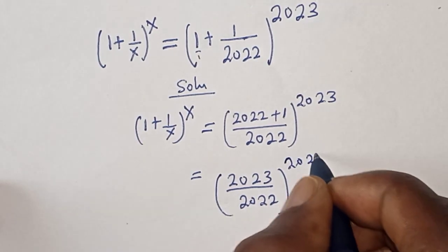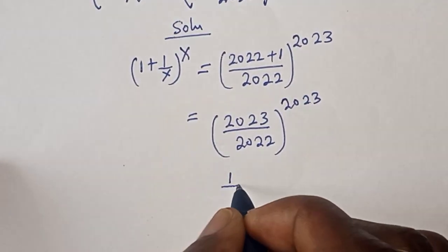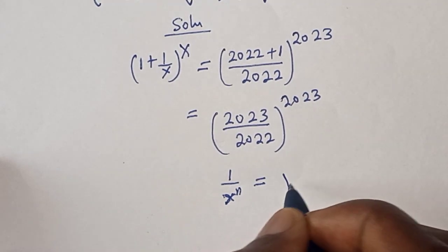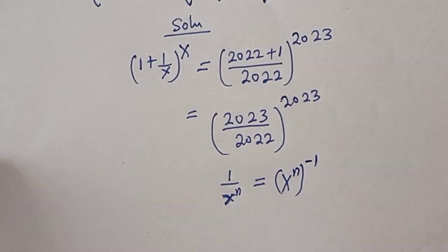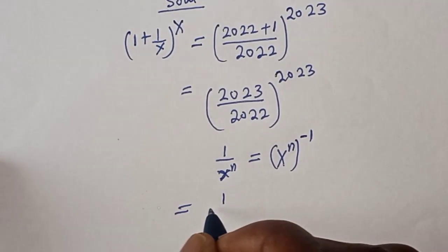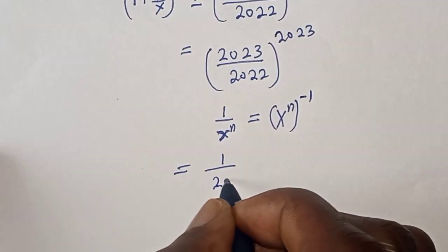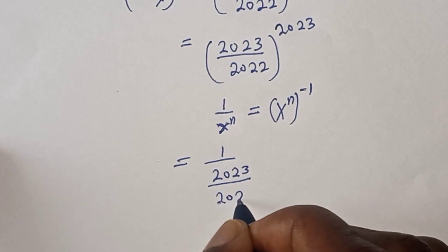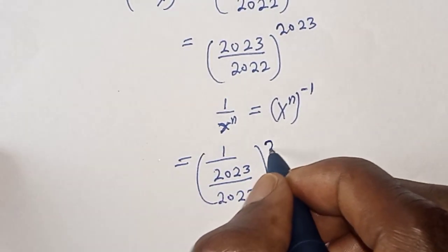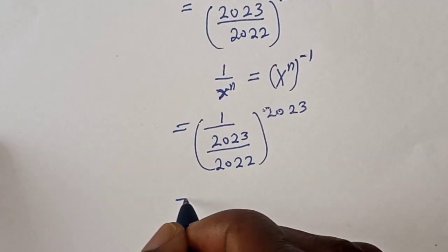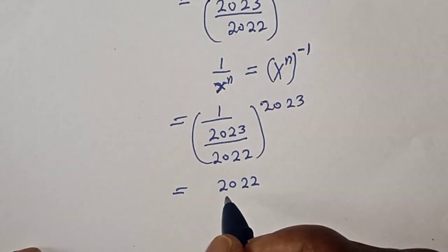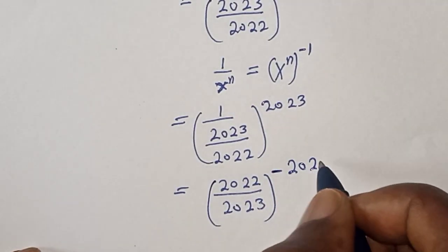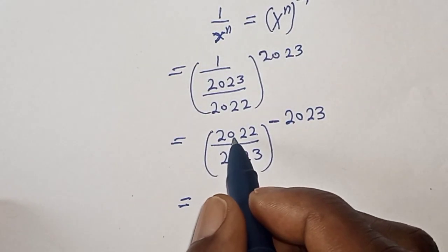Remember this rule: if you have (1/s)^n, this equals s^n raised to the power of minus 1. Applying this, we get 1 over (2023/2022) to the power of 2023, which equals (2022/2023) to the power of minus 2023.